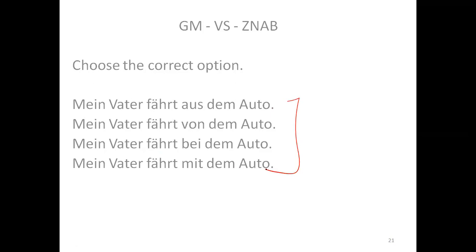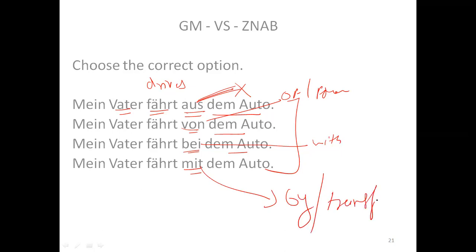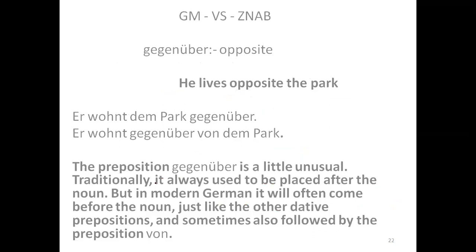'Mein Vater fährt mit dem Auto' — my father drives by car. Here aus means out of/from — wrong. Von means of/from — wrong. Bei means with, but by means of transport uses mit. So mit dem Auto is correct. Mit also gives 'by' in case of transport. So the answer is mit.